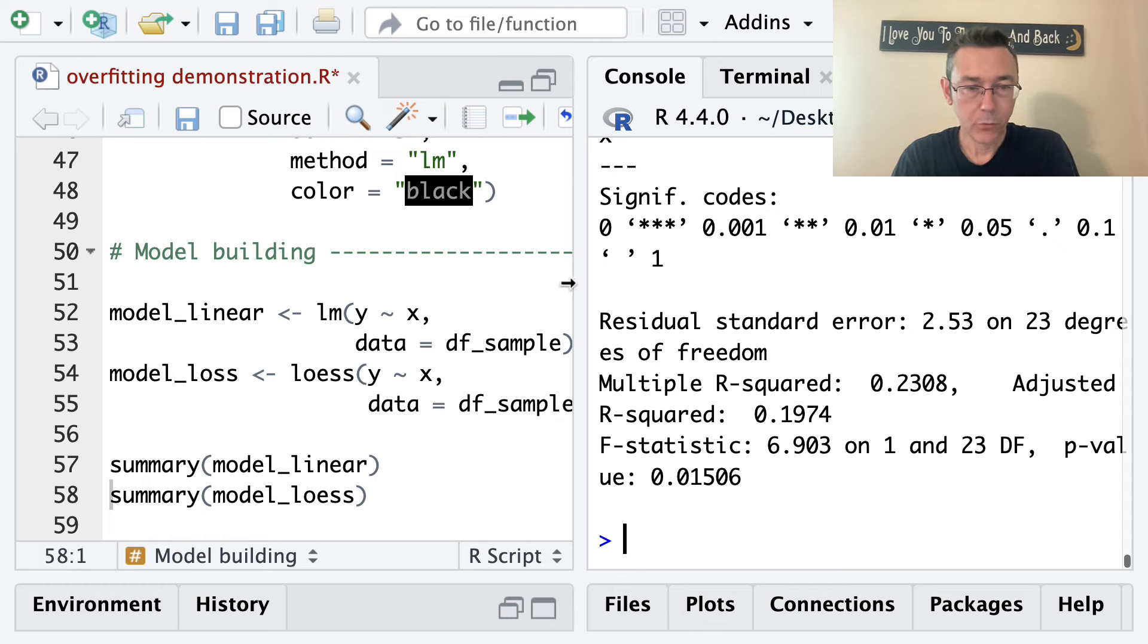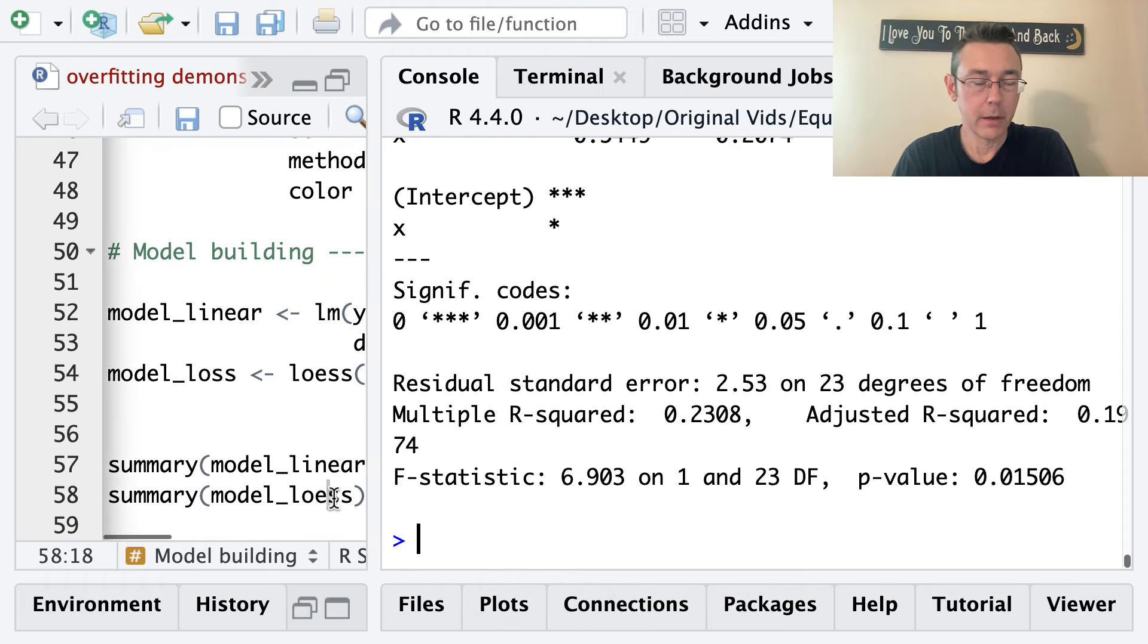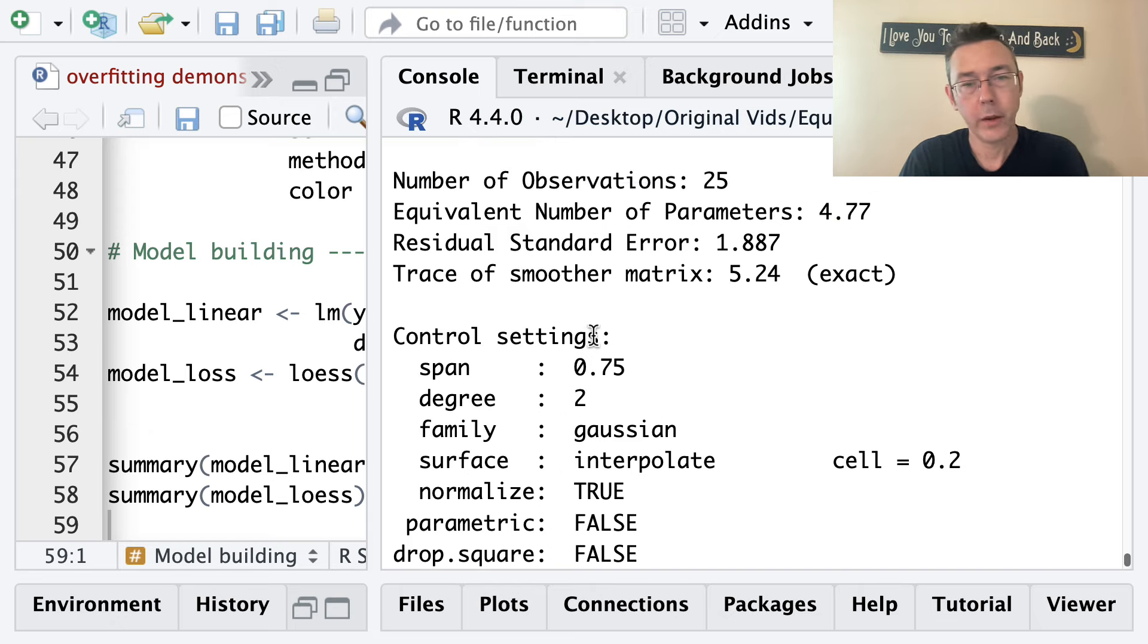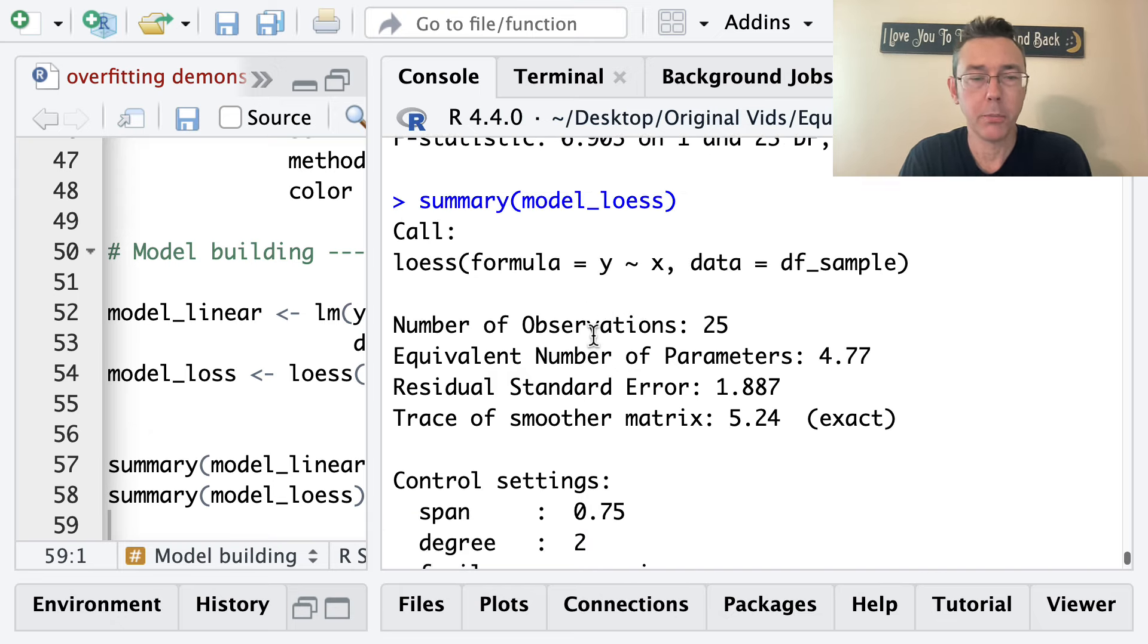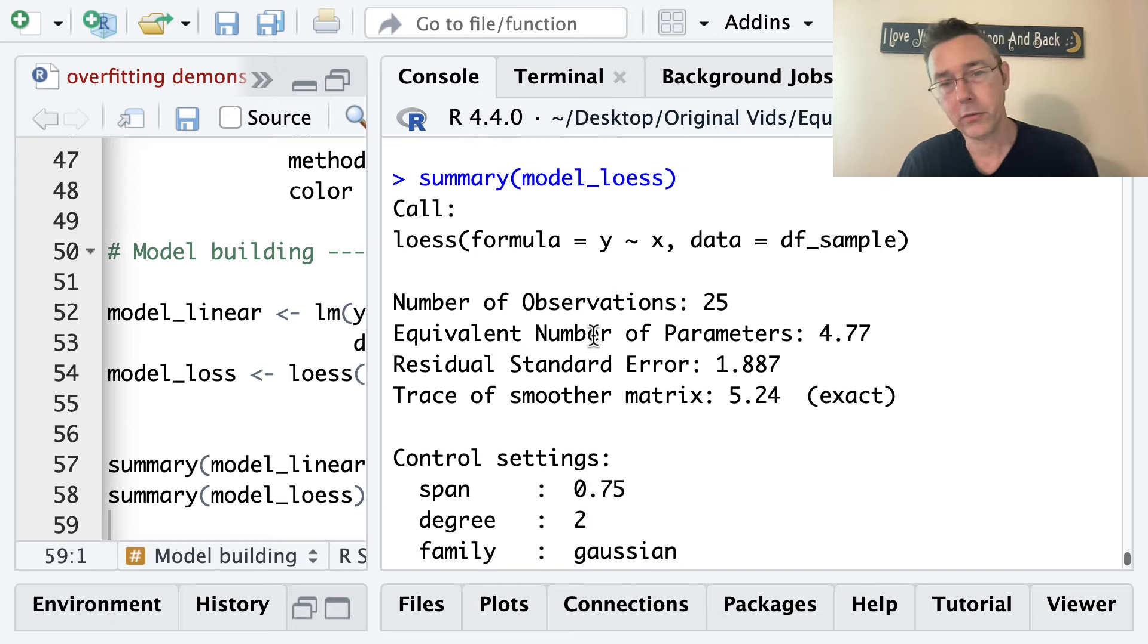All right, so 2.53 for the linear model, let's see how the loess model does. Here we have a somewhat different output, we get some information about how the loess model was built. But we also get residual standard error here. And now it's 1.887. So that's indicating that the loess model is fitting the sample data more closely. And that's exactly what we saw in the plot, and exactly what we were expecting. Again, when you have a more flexible model, it tends to fit your sample data more closely. That's kind of the point.